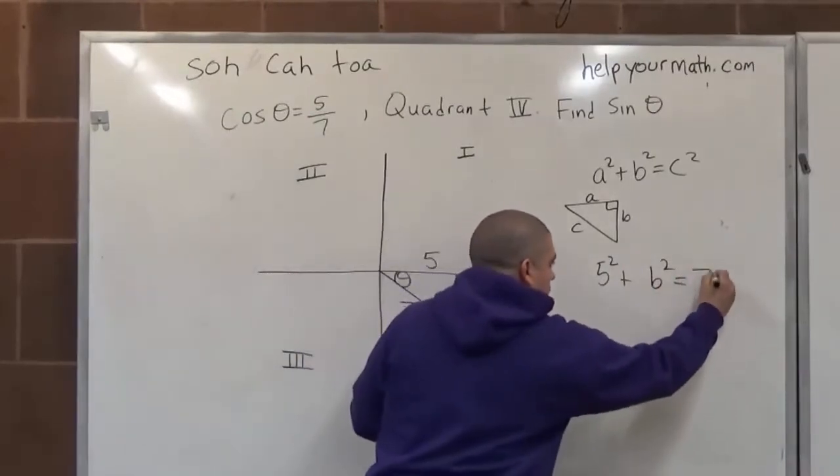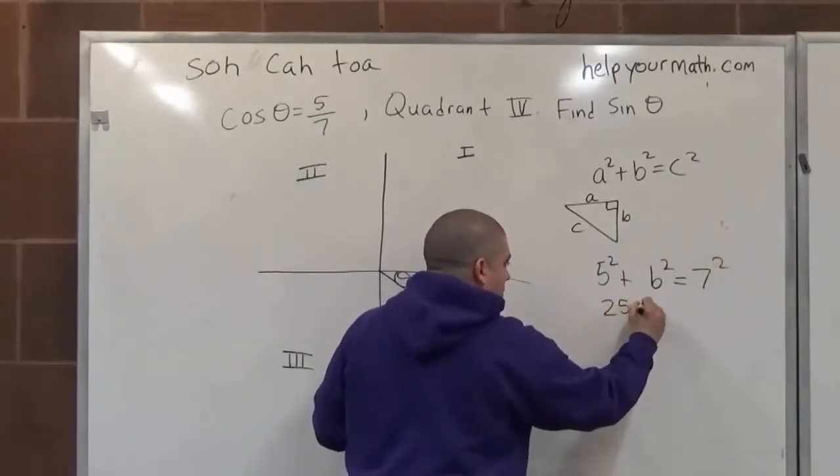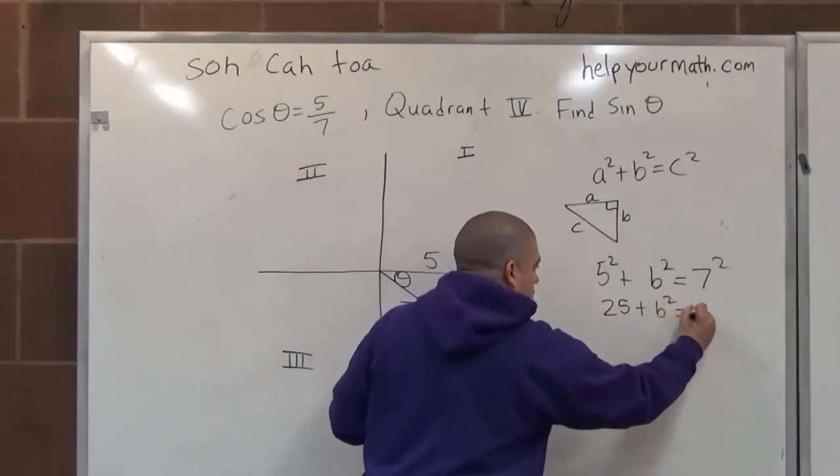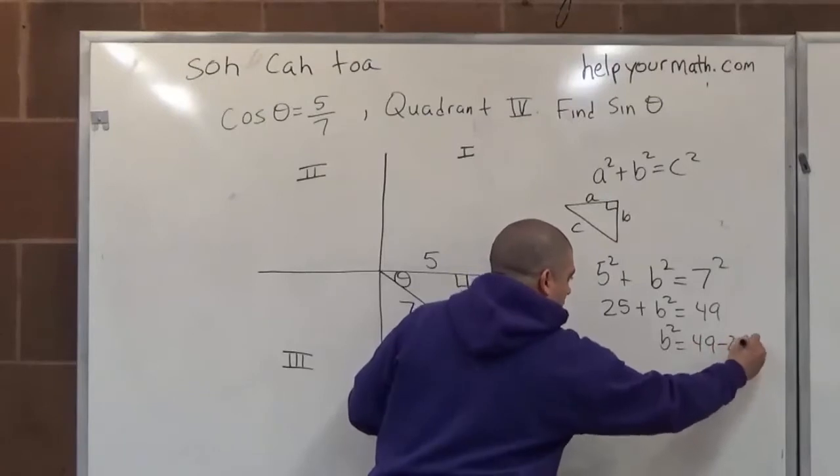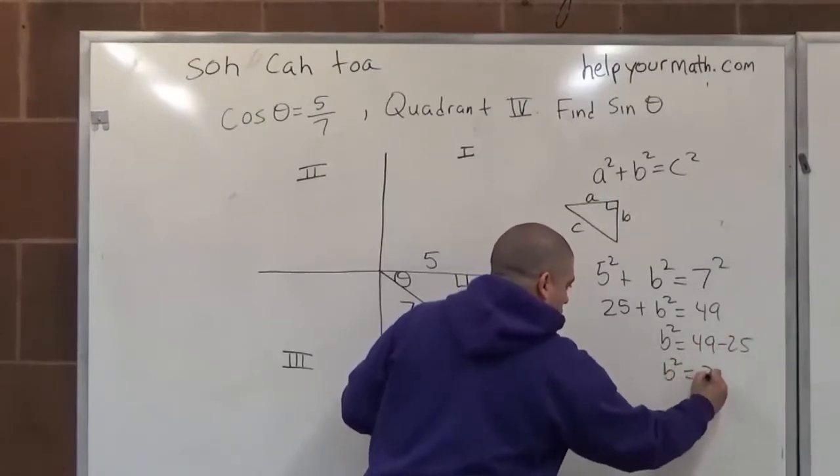So then I have 25 plus b squared equals 49. So b squared equals 49 minus 25, and b squared equals 24.